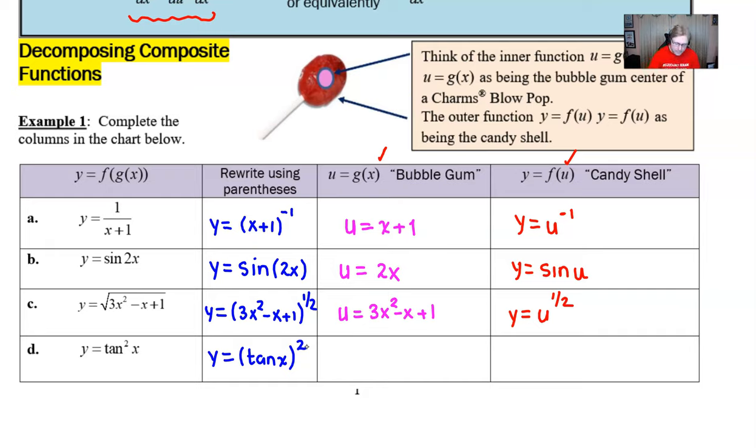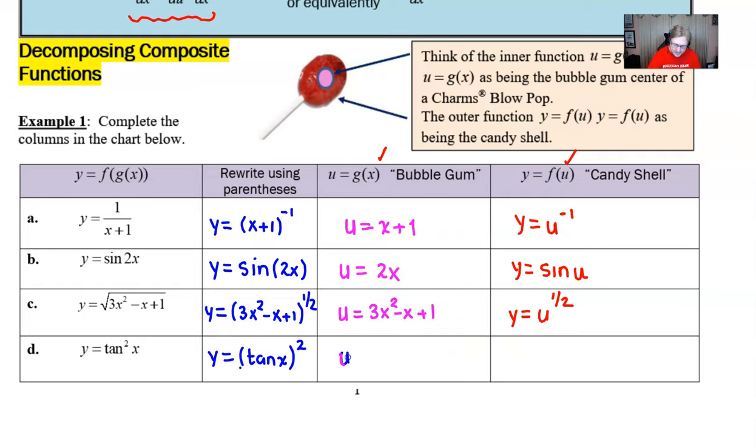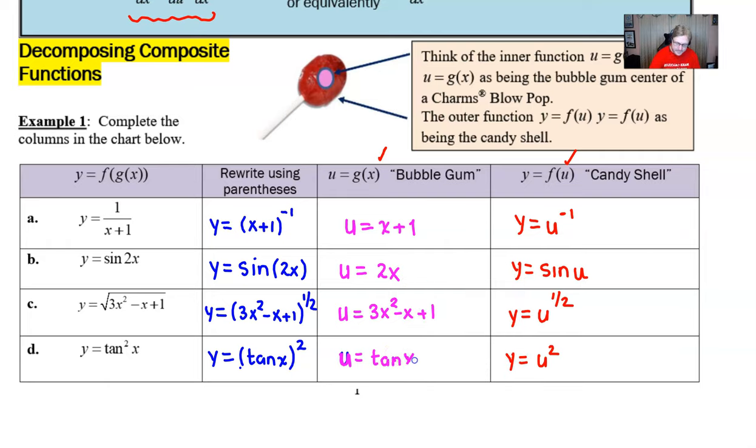Once we've identified that, then of course our u would be the tangent of x. That's the value that's in the parentheses. And then our y would be u to the second power.